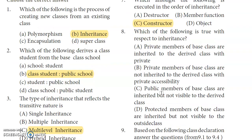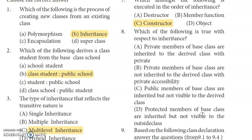Eighth question: Which of the following is true with respect to inheritance? Option A: Private members of the base class are inherited to the derived class with private accessibility. Option B: Private members of the base class are not inherited to the derived class with private accessibility. Option C: Public members of base class are inherited but not visible to the derived class. Option D: Protected members of base class are inherited but not visible to the outside class.